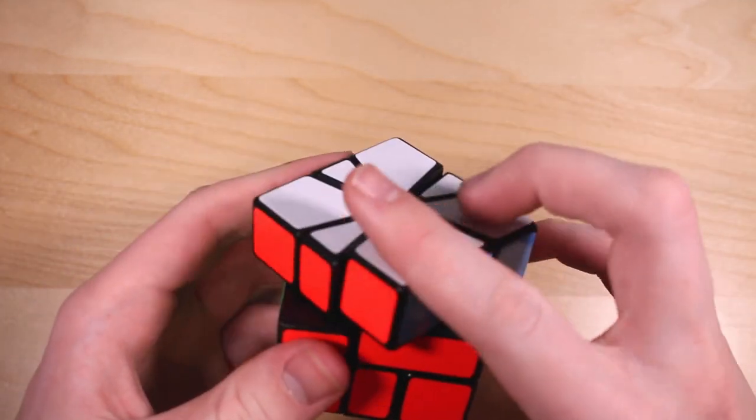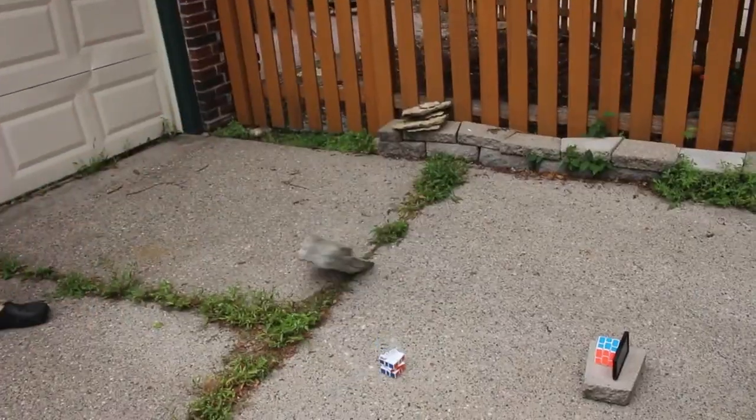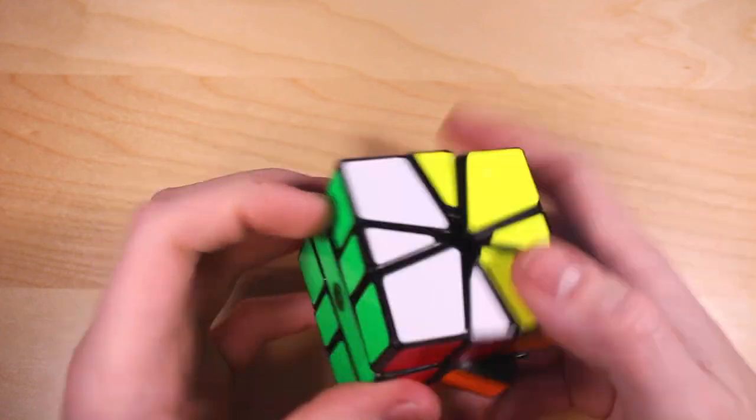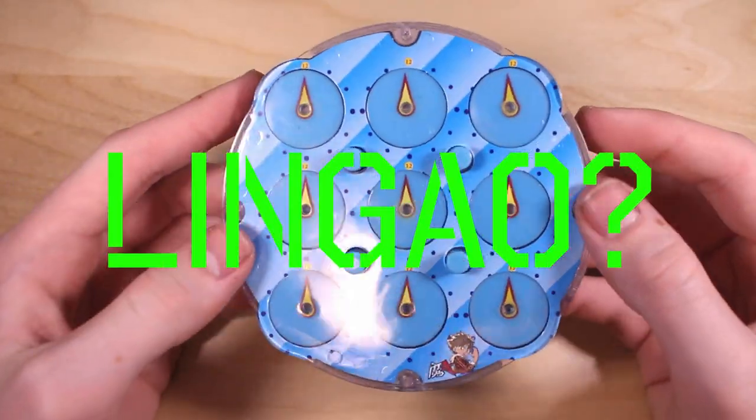Qi Yi Square 1. My only Square-1. I used to have a Shengxiao but I destroyed it. I made a video destroying it. That was fun. Anyways, this I guess is an okay puzzle. Unknown Brand Clock. It's a clock.